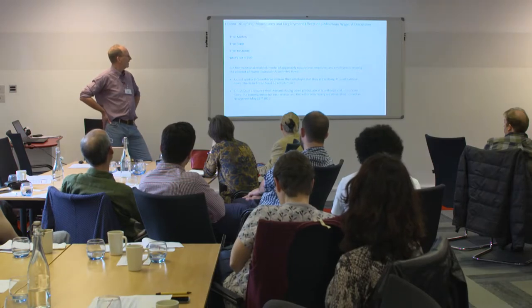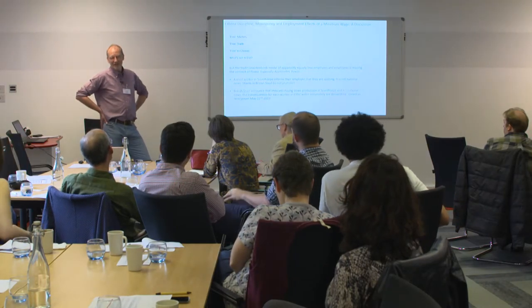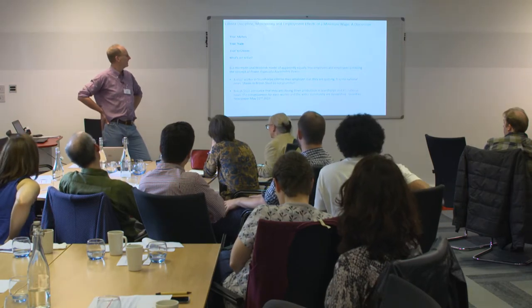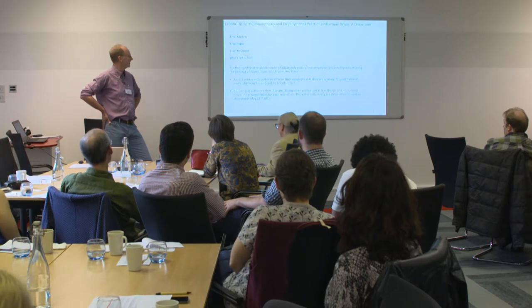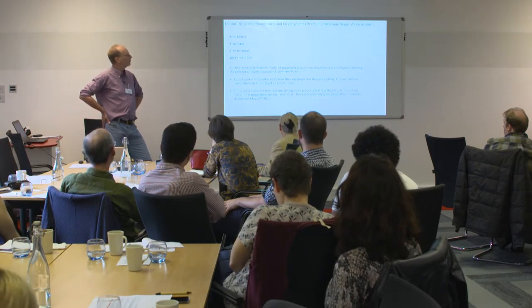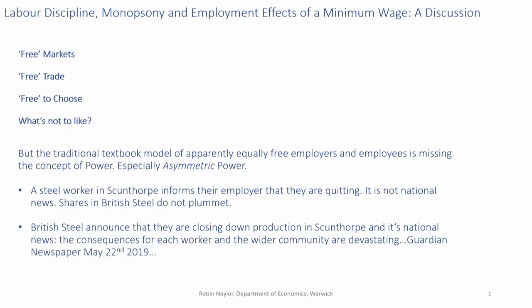My favorite recent example of asymmetric power: I spent my teenage years in North Lincolnshire, England, where there's a company town called Scunthorpe, next to Grimsby. These are heavily Brexit-voting places. A steel worker in Scunthorpe informing their employer that they're quitting is not national news — shares in British Steel do not plummet. But when British Steel announces, as they did a few weeks ago, that they're closing down production in Scunthorpe — that's national news, and the consequences for each worker and the wider community are devastating.